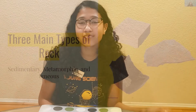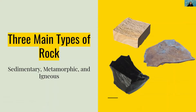Today, we're going to be doing an experiment to replicate the three types of rocks. What are the three main types of rocks? The three main types of rocks are sedimentary, metamorphic, and igneous. Let's learn more about each one.